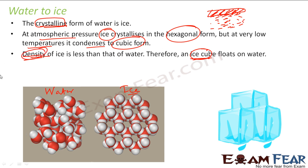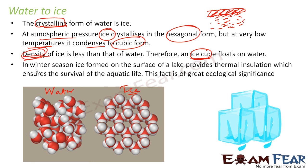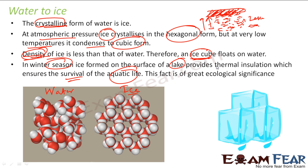Ice has less density than water and therefore floats. In winter, the ice covering on lakes provides thermal insulation — it prevents the water below from losing heat rapidly, maintaining the temperature of the water inside the lake. This allows aquatic species like fish and dolphins to survive. This is critical for ecological balance, because without this ice covering, the species in lakes could die.